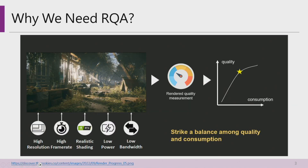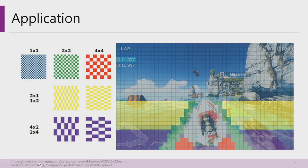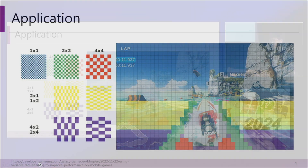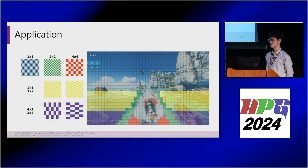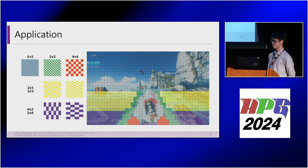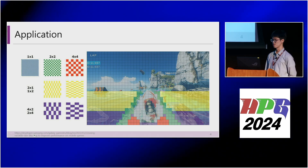Why do we need RQA? As 3D scenes become more complex, how to balance quality and power consumption is a critical problem. RQA provides a criteria to achieve this balance. Another advanced application is that RQA can be used for Variable Rate Shading, or VRS, which determines resource requirements for each tile in real time.